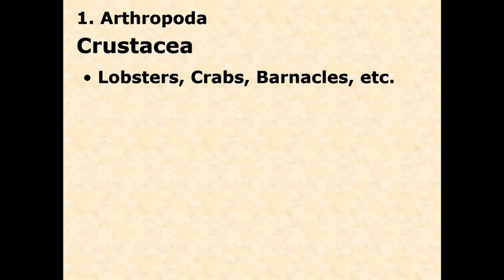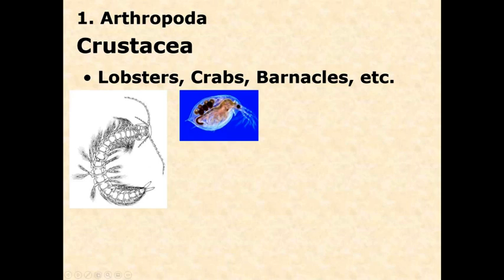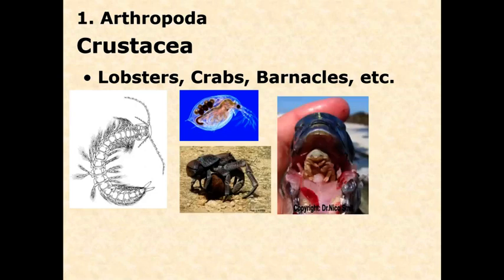The next group are the crustaceans — a very, very diverse group, primarily in marine and freshwater environments, although there are terrestrial crustaceans. You're familiar with lobsters, crabs, and probably barnacles, which are crustaceans also. Some have maintained that ancestral body plan of a head and a homonymous trunk. Others have very highly modified body plans — barnacles, for instance. Some get quite large, some are parasites. There is no single crustacean body plan, from fairly simple ancestral forms to very complex ones with many different types of bodies.